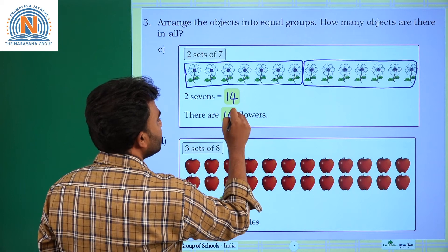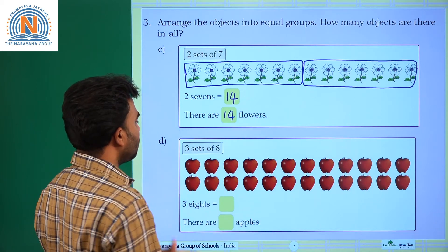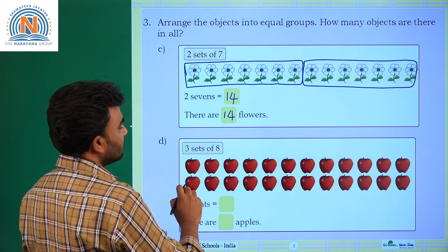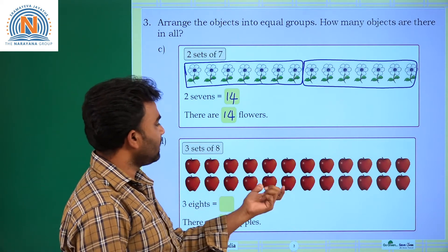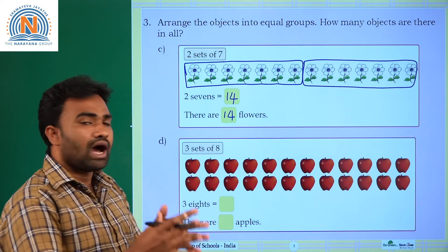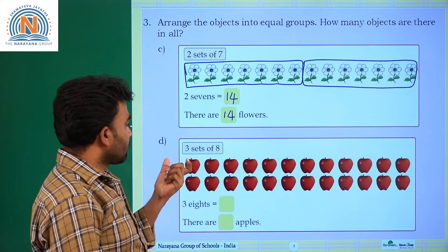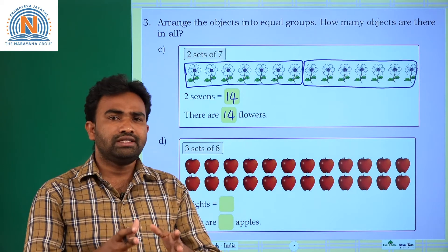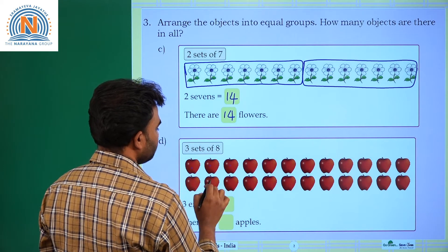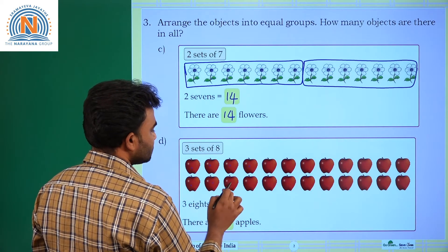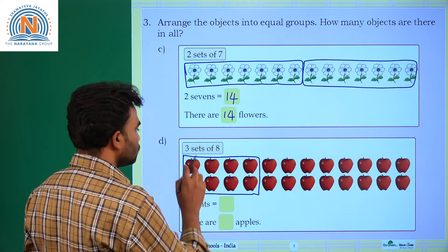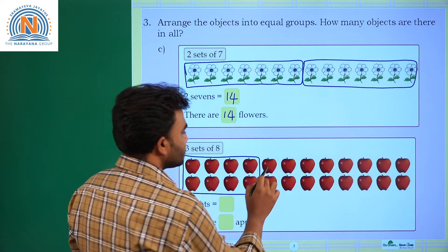Next: three sets of eight. Here they are asking us to arrange the given apples into three sets, and each set should have eight apples. One, two, three, four, five, six, seven, eight — these eight apples go into the first set.